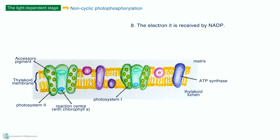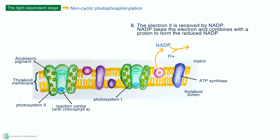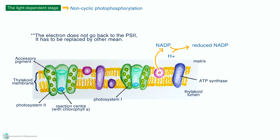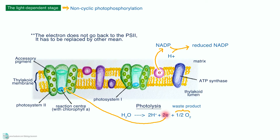This time, it will be received by NADP. NADP takes the electron and combines with a proton to form reduced NADP. Since the electron does not go back to photosystem II, we need to find a way to replace the lost electron. That is why photolysis occurs. A water molecule splits and the electron released is used to replace the electron lost from photosystem II. Oxygen is produced as a waste product.